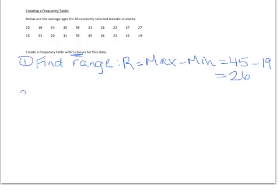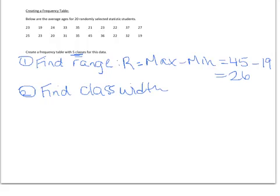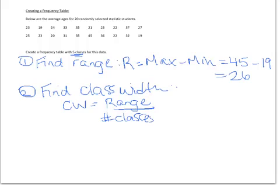The second thing we're going to do with that range is figure out the class width. If we have to span 26 years in our frequency table and we want to break that into five classes, we need to find how wide each class should be. The class width — I'll abbreviate it CW — is your range divided by your number of classes. Our range was 26 and our number of classes is 5, so this comes out to 5.2.